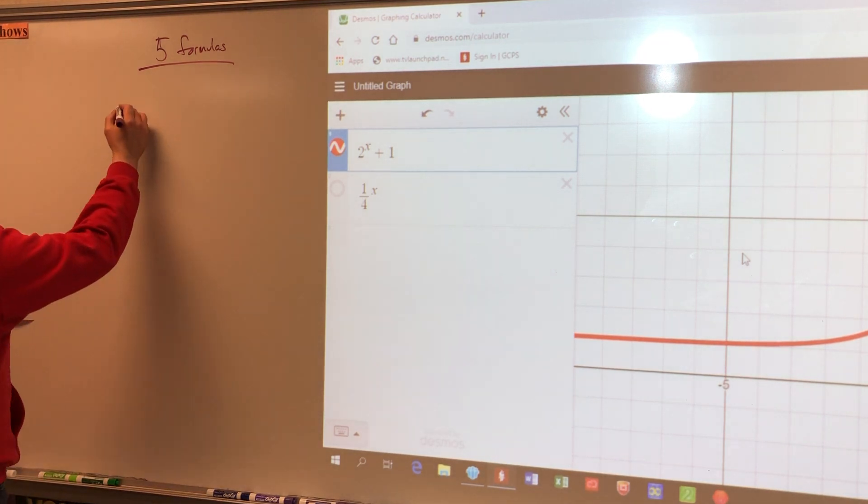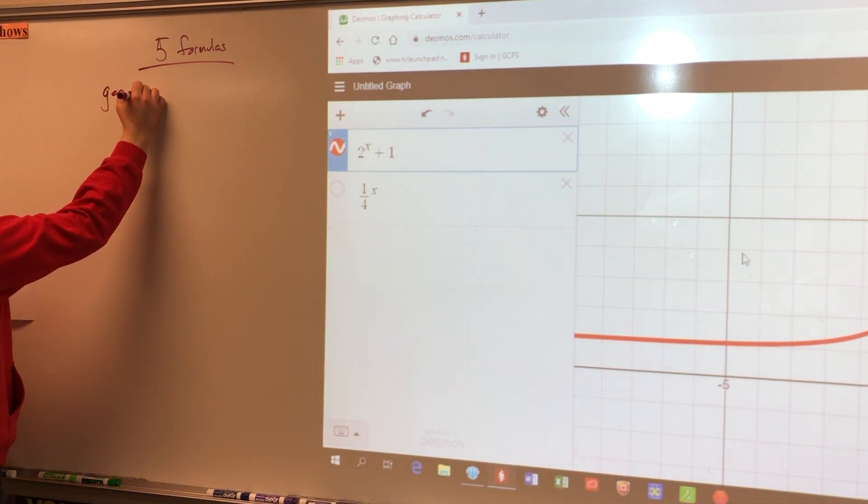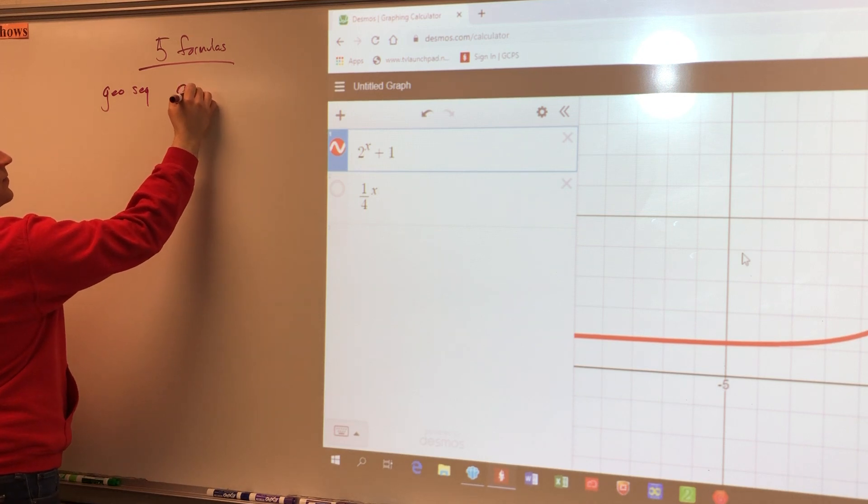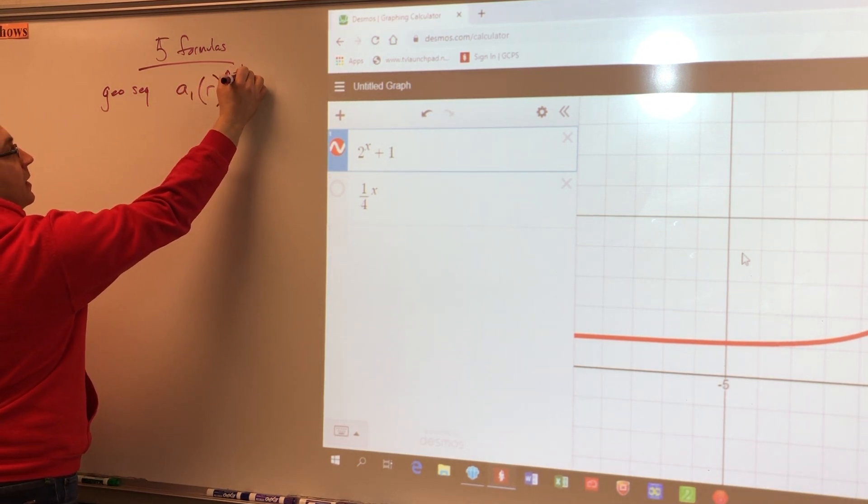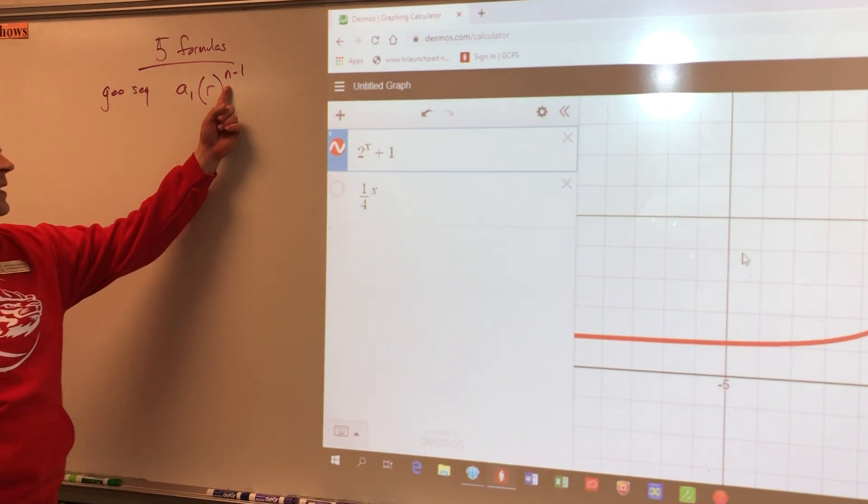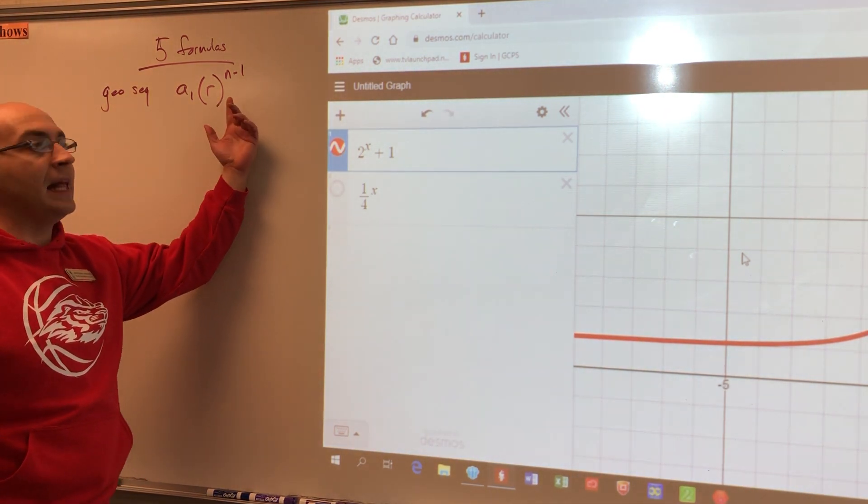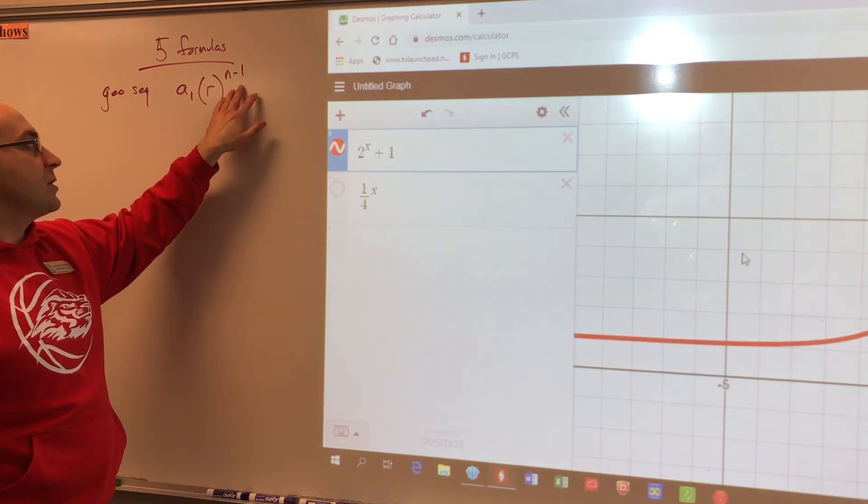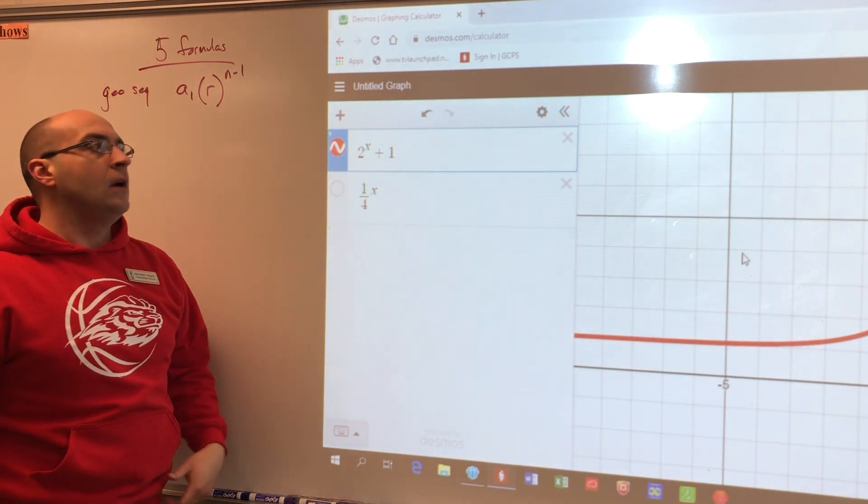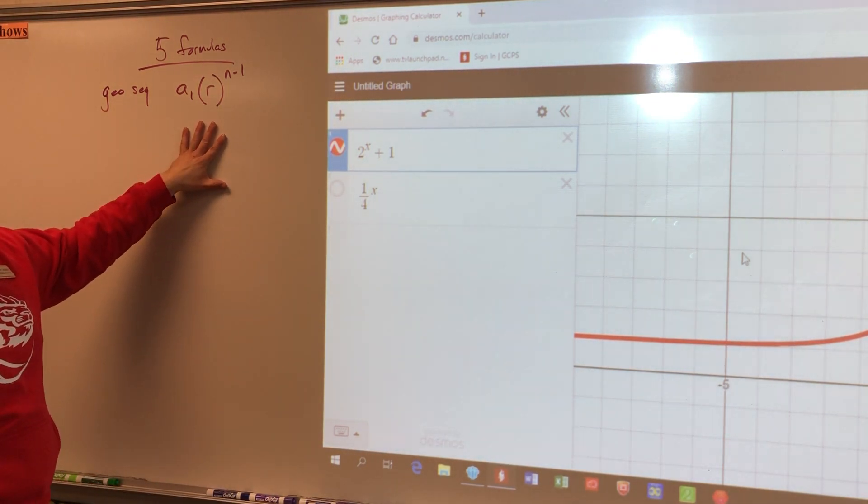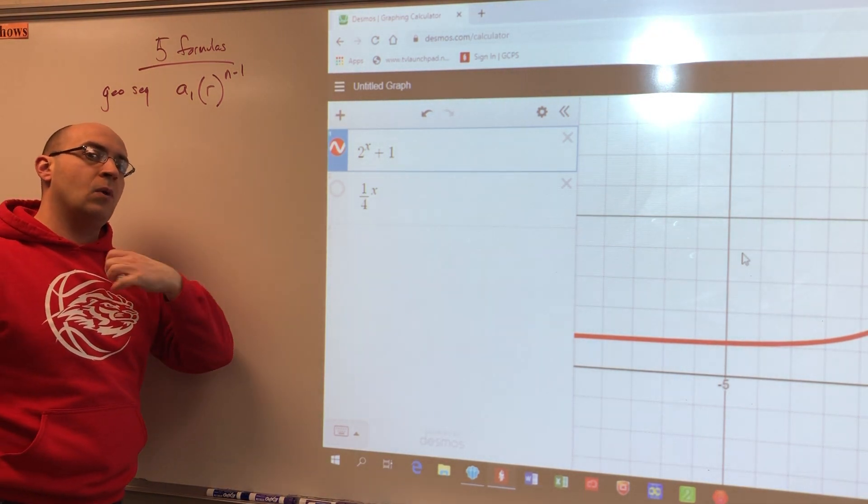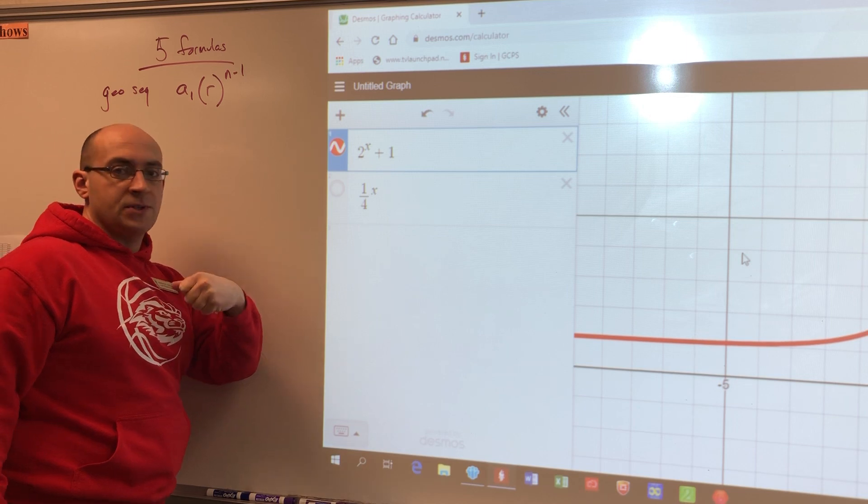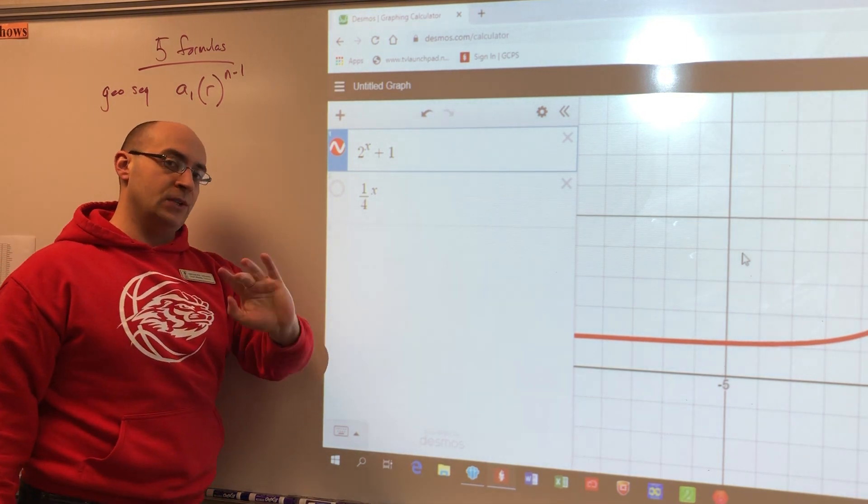So from a geometric sequence standpoint, we're looking for the first term times the common ratio raised to the n minus one power. And remember that n is what term am I looking for? So if I'm looking for the 11th term, I am just going to raise this to the 10th power. Now that should be relatively easy to solve. The problem is when we get into, well, if I give you the first term and the third term, how do we do that?